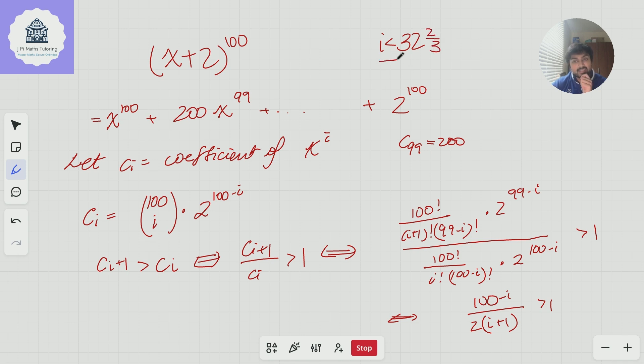Or in other words, since i has to be an integer here, this is true if and only if i is less than or equal to 32. So what have we shown? We've shown that c_{i+1}, the (i+1) coefficient, is bigger than the i-th coefficient if and only if i is smaller than or equal to 32. Why is this useful for us? Well, I claim that c_33 is going to be our largest coefficient.